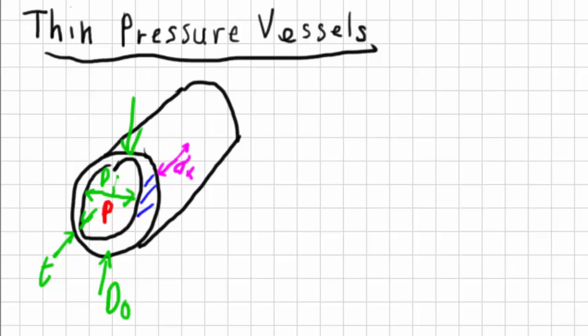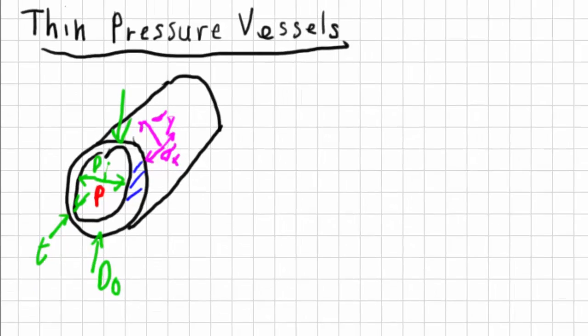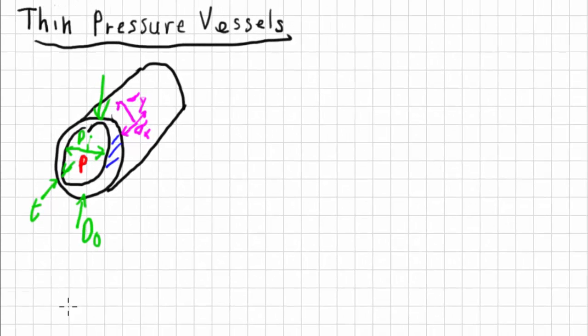And then there's the hoop stress. And that's on this direction, stress in the y. And it's simplified because it's a relatively thin section. And that means that the wall thickness has got to be less than the inner diameter divided by 20.